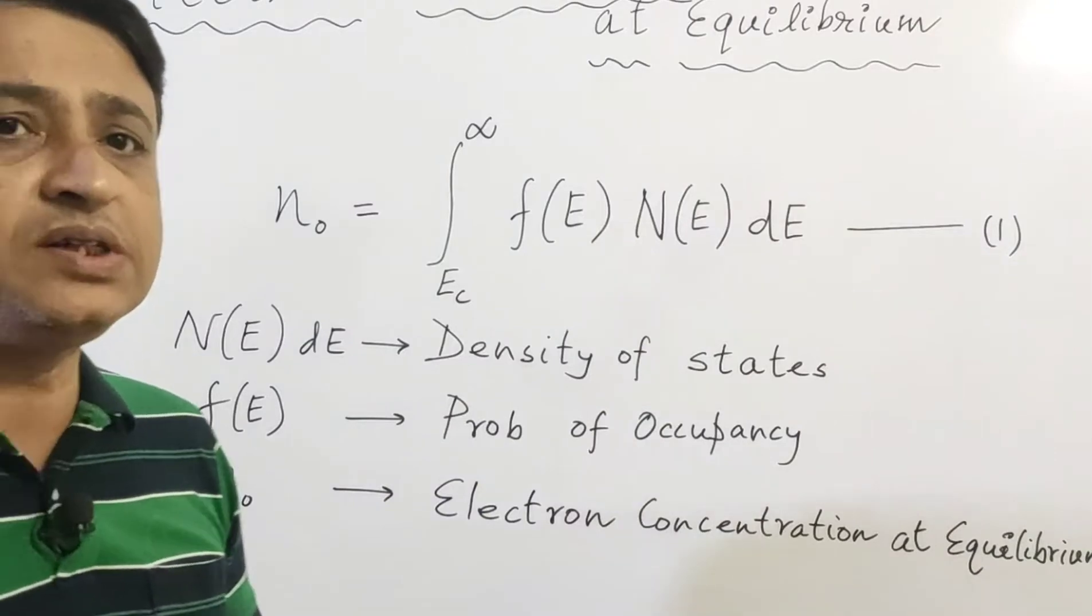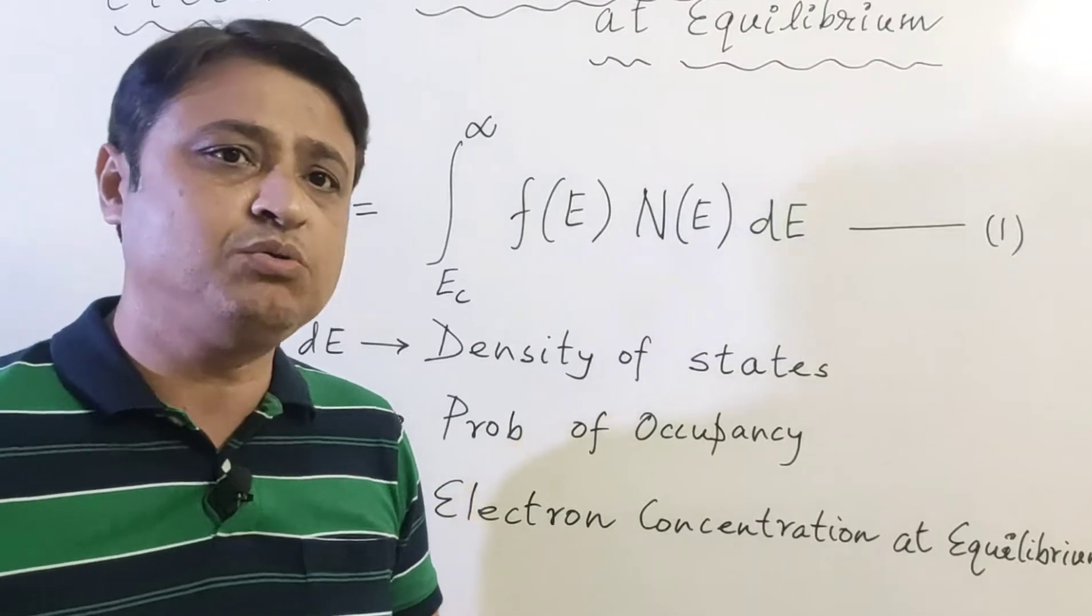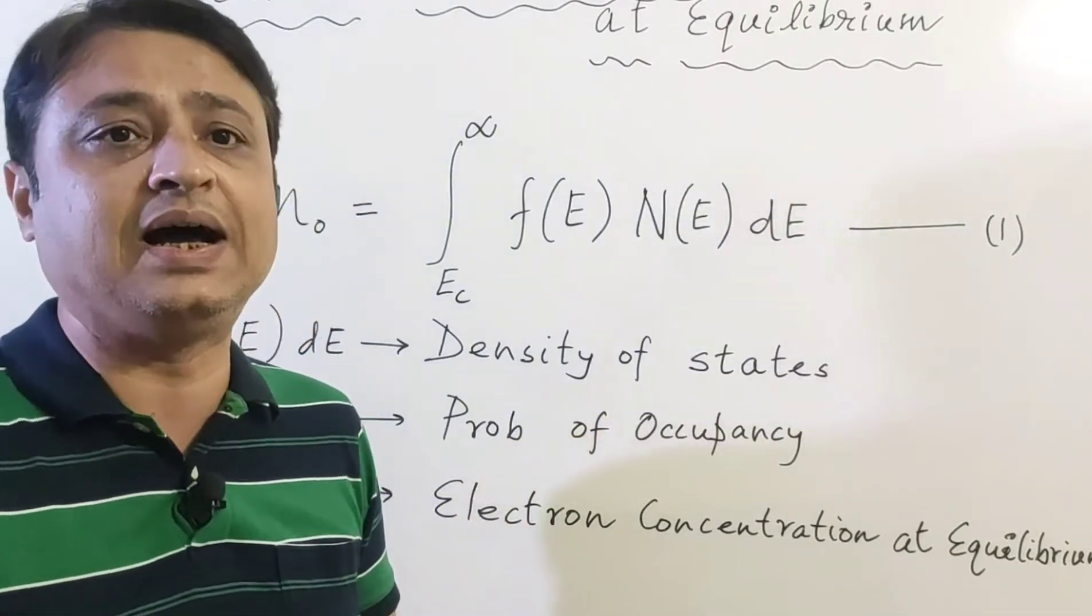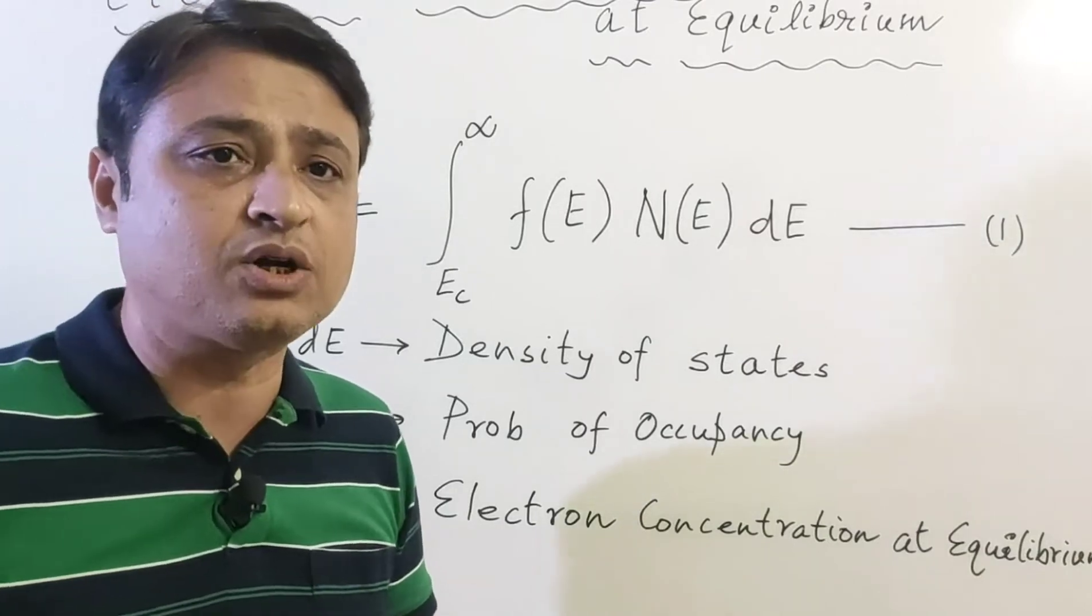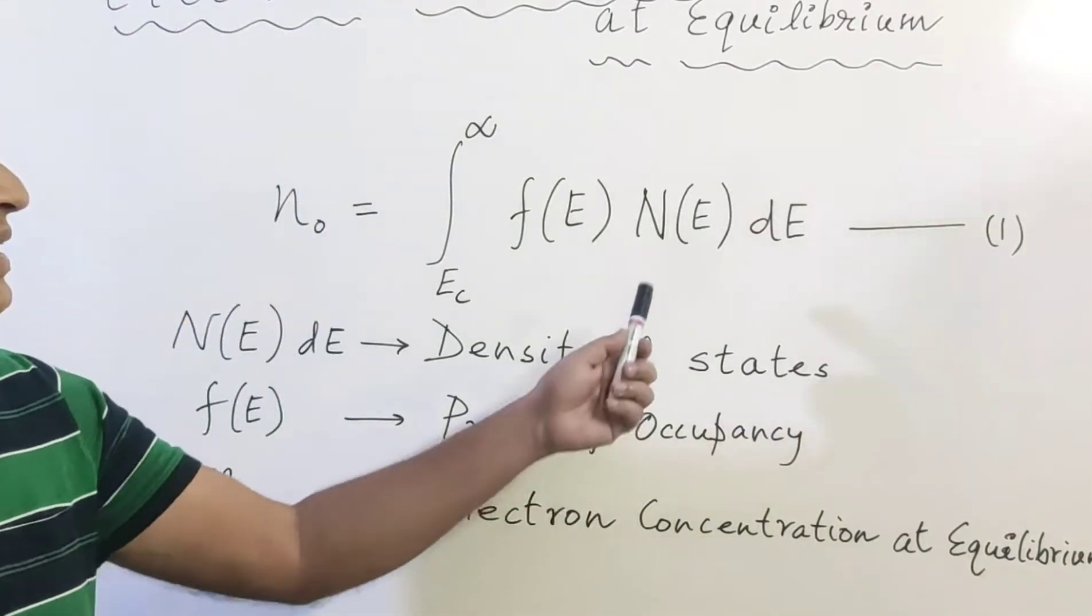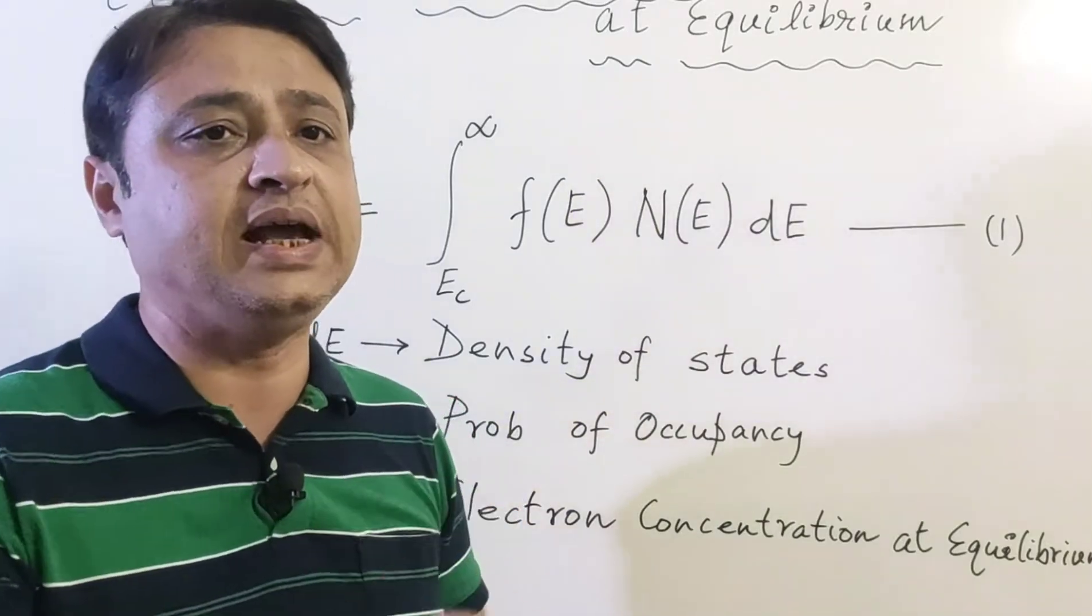The concentration of electrons in the conduction band at equilibrium can be found by integrating over the entire conduction band. It is given by the product of the density of states N(E) with the probability of occupancy f(E).